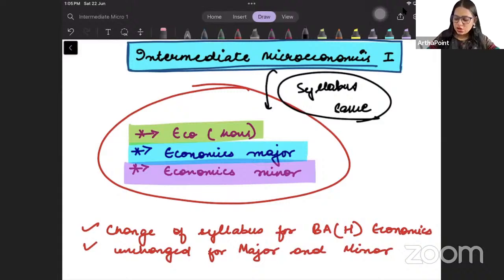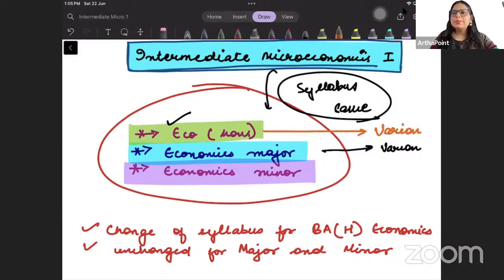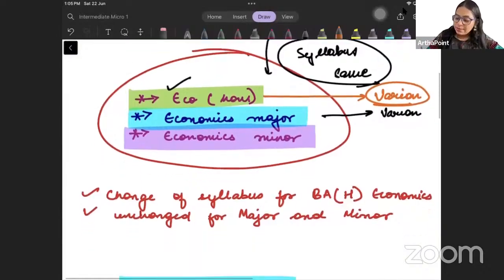Last year third semester, eco-honour students had read a different book AMG, and major people studied Varian. Now this is also changed from AMG, and economic honours students will also study Varian. When I was teaching at Delhi University, I used to teach Varian only, and we used to take the producer theory from Snyder. But now we will be taking the consumer theory from Varian, and producer theory from Serrano. The course that we will now be taking is going to remain more or less the same for eco-honours, eco-major, and eco-minor.